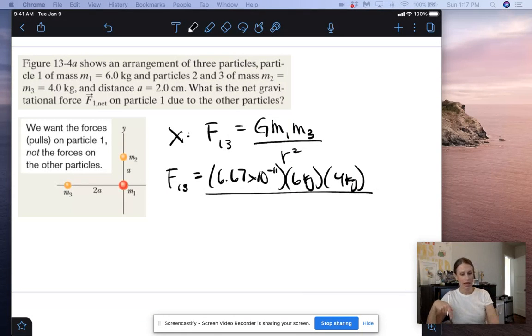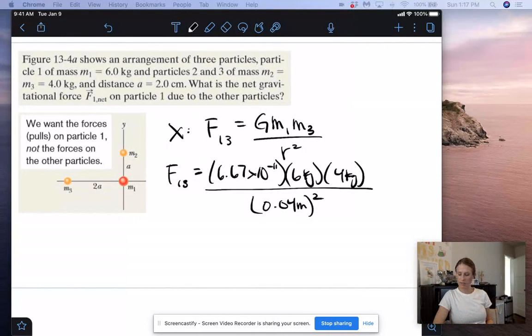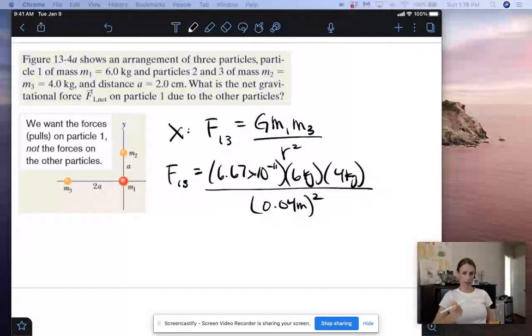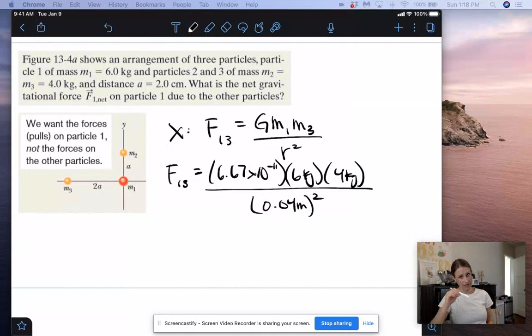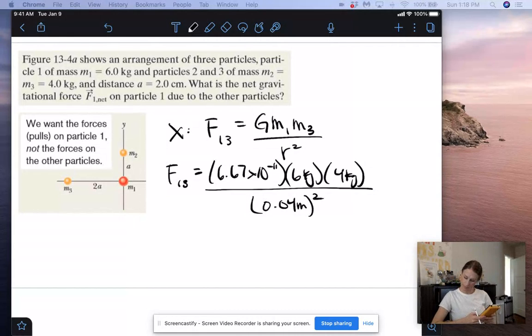And then divided by the distance between them, which we can see is 2a, and we know that a is 2 centimeters. So that means it's going to be 4 centimeters, or 0.04 meters. That has to be in meters, because our g term, the unit, even though I got lazy and didn't write it, the unit for g is newton times meters squared over kilograms squared. So since meters squared is in that big G unit, our universal gravitation unit, then we have to have this in meters. So we get 6.67 times 10 to the negative 11th times 6 times 4, and then we're going to divide that by 0.04 squared.